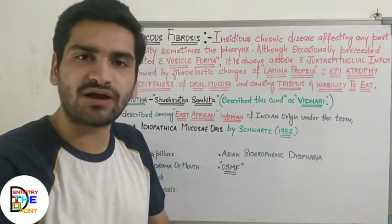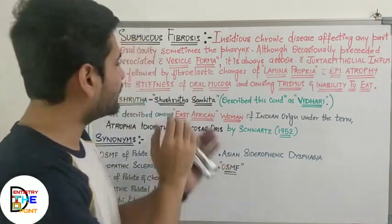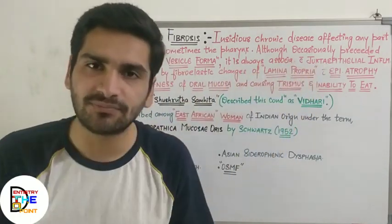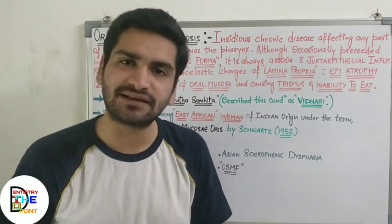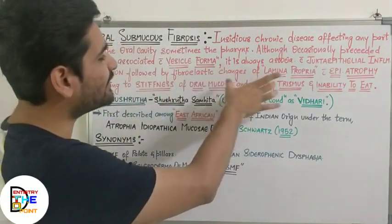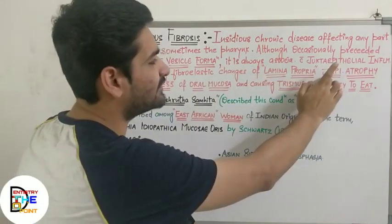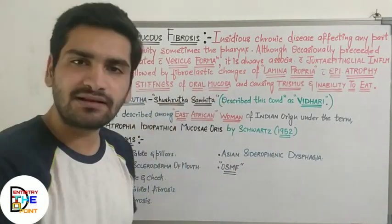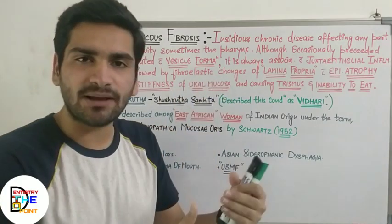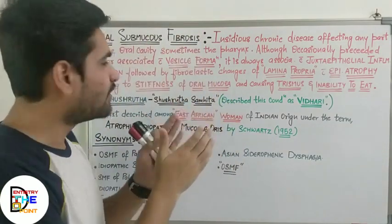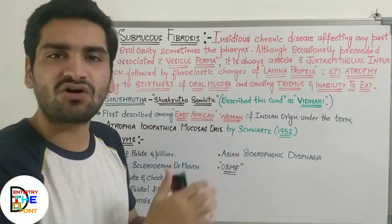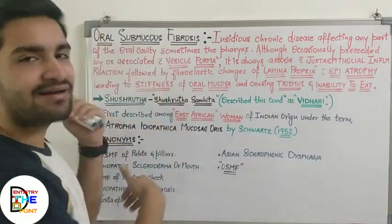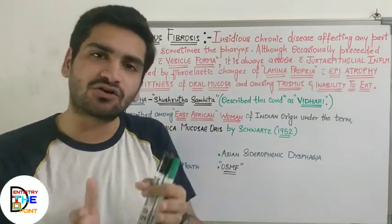Following juxta-epithelial inflammatory reaction, there are fibroelastic changes — changes in the fibroblast compartment — of the lamina propria. The lamina propria is the loose connective tissue layer beneath the basement membrane of the epithelium. These fibroelastic changes of the lamina propria occur with epithelial atrophy of the overlying epithelium, leading to stiffness of the oral mucosa. There will be more fibroblasts and fibrous bands, and ultimately stiffness causing trismus and inability to eat.